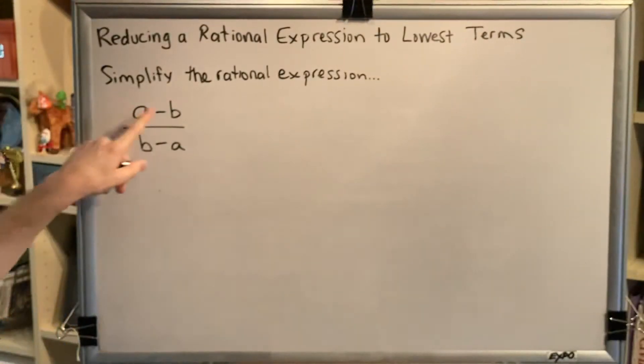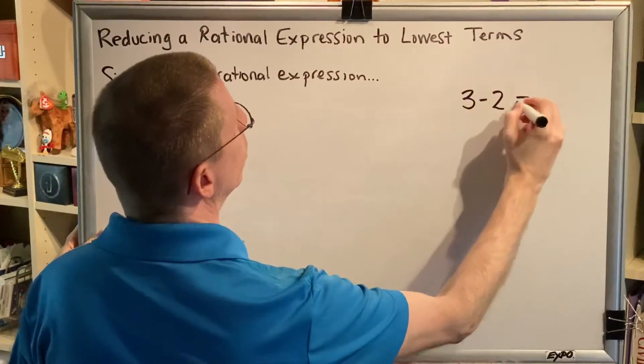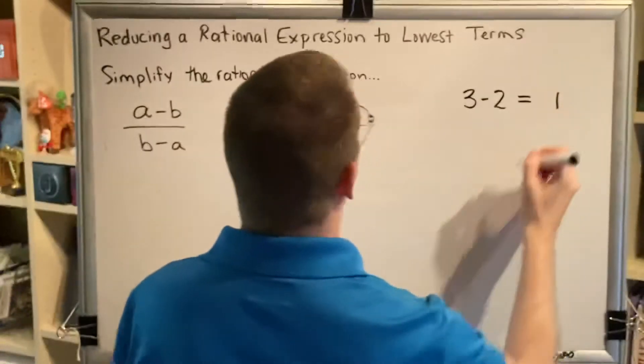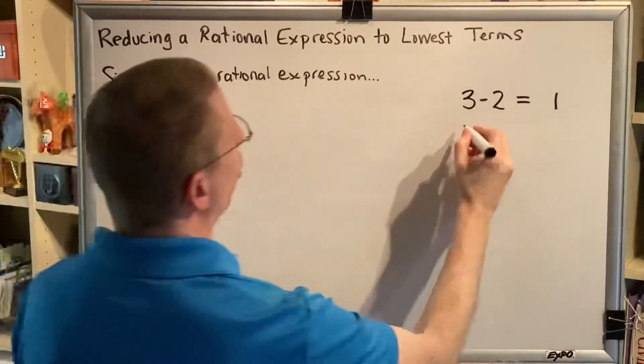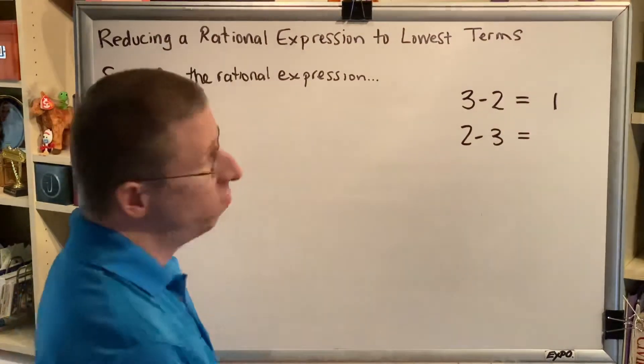Let's imagine that a is 3 and b is 2. So we would have 3 minus 2. What's 3 minus 2? Well, that's an easy question. That's 1. But when you reverse the order, what's 2 minus 3? Well, hopefully you said negative 1.